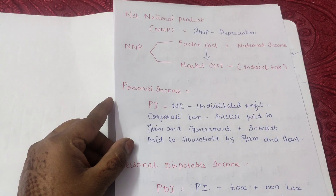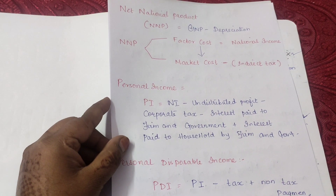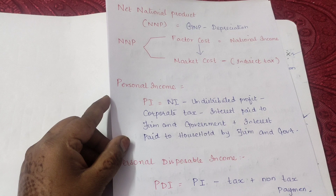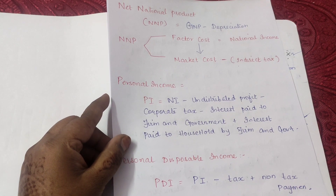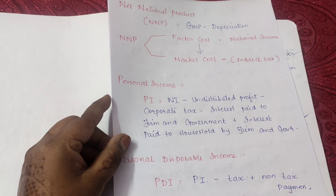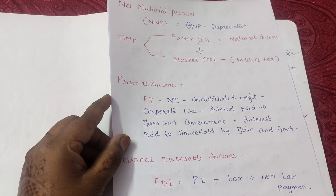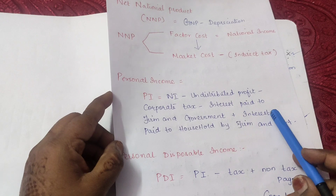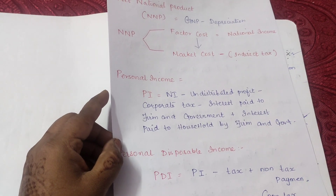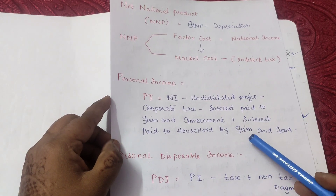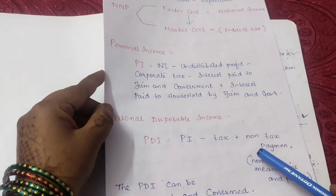To calculate Personal Income from National Income, the formula is: Personal Income = National Income − Undistributed Profit − Corporate Tax − Interest paid to firms and government by households + Interest paid to households by firms and government.